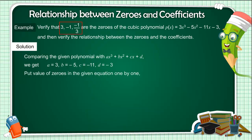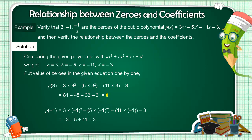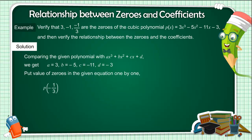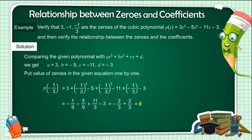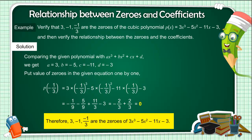Put the value of each zero into the given equation one by one: p(3), p(minus 1), and p(minus 1/3) each equal 0. Therefore, 3, minus 1, and minus 1/3 are confirmed zeros of 3x³ minus 5x² minus 11x minus 3.